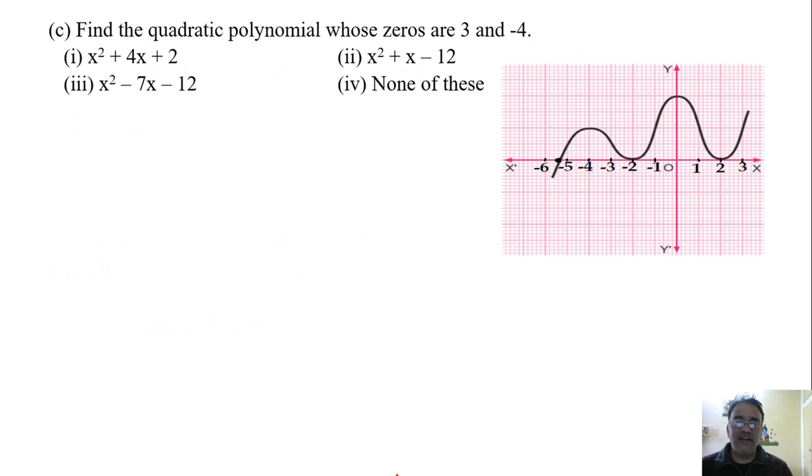Now we'll move to the third question: find the quadratic polynomial whose zeros are 3 and minus 4. We can take the first one as alpha and the second as beta. Then we can find alpha plus beta, the sum of zeros. What are we getting for the sum of zeros? Minus 1, right. 3 plus minus 4 is minus 1. And what is the product? Minus 12.